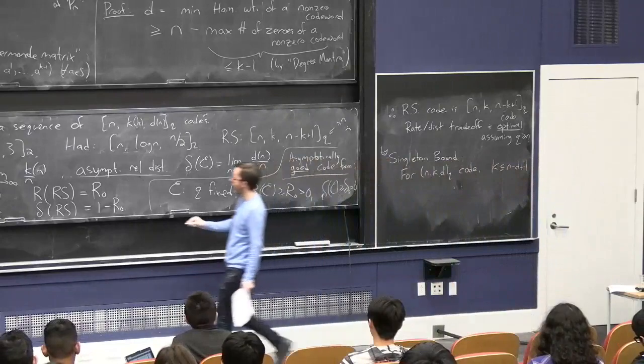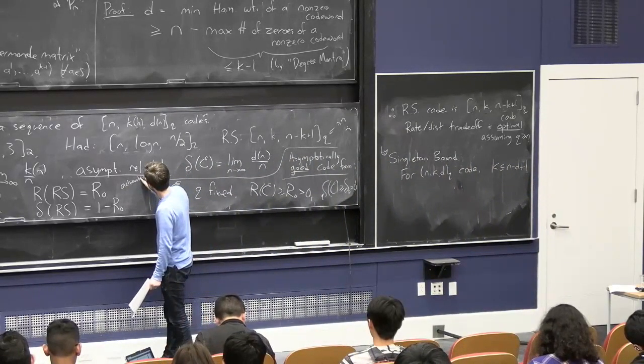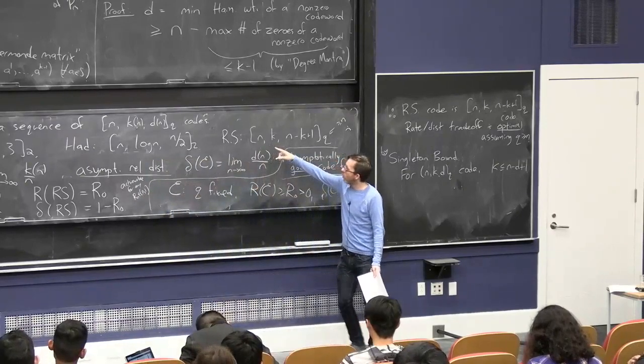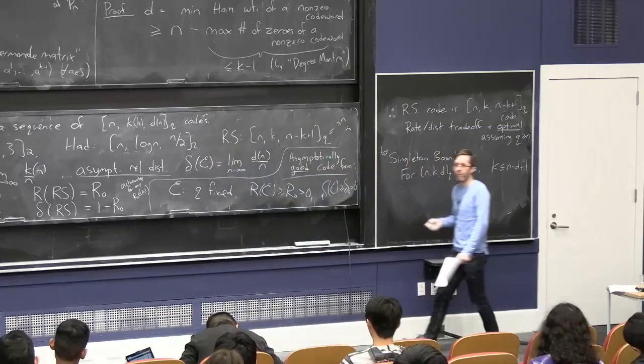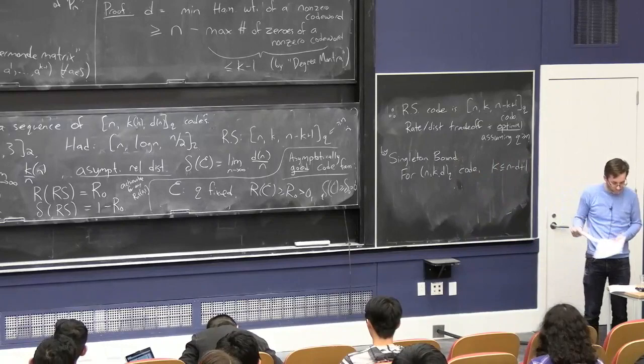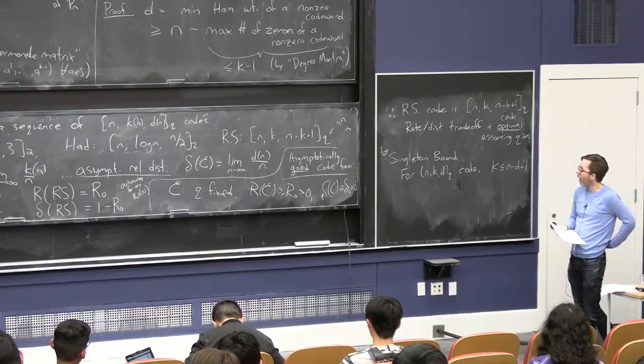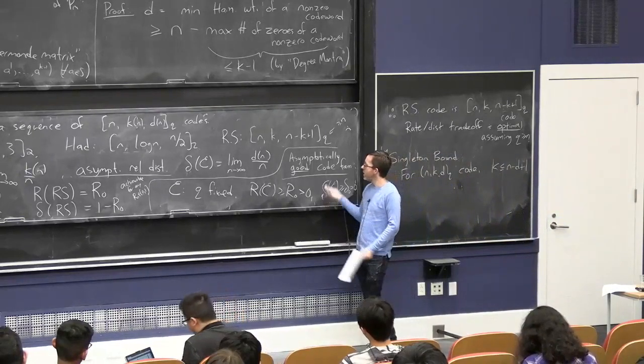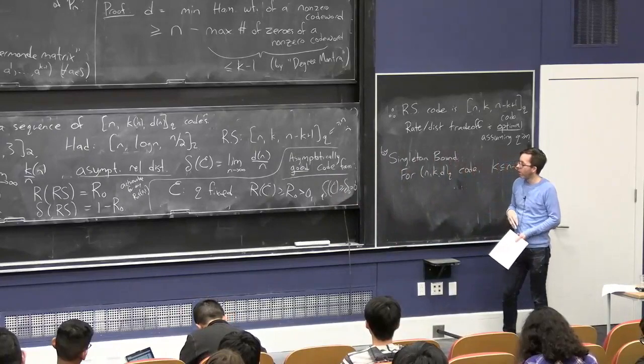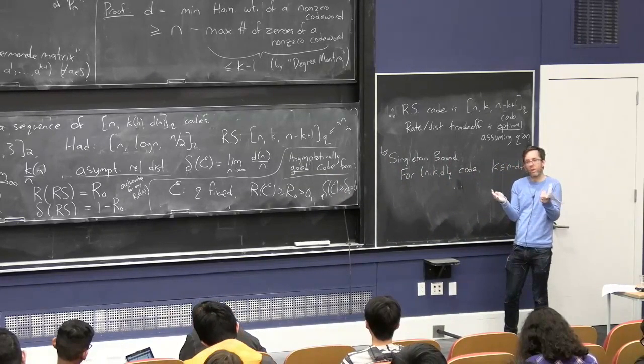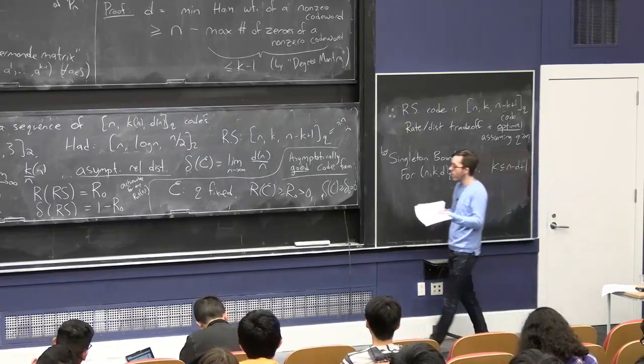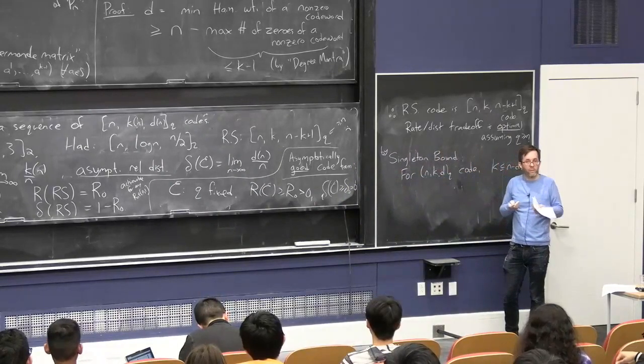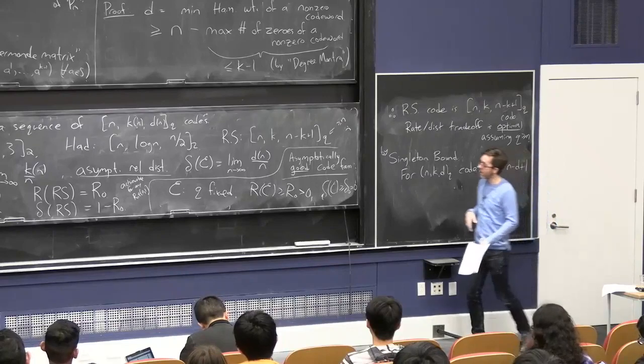So you can achieve this for any r0. Because in the Reed-Solomon code, there's no fixed dependence between n and k. Like, given any n, you can take whatever k you want. So you can take it to be r0 times n. OK, so a question that was open in the 60s is, do these even exist? Can you have a binary code where the rate is a constant, so when you encode a message of length k, you blow up the length by only a constant factor? And where the relative minimum distance is a constant, so that you can correct up to some constant fraction of bit corruptions? And the answer is, yes, these things exist.